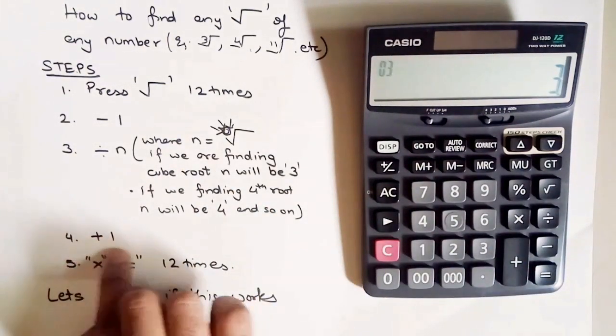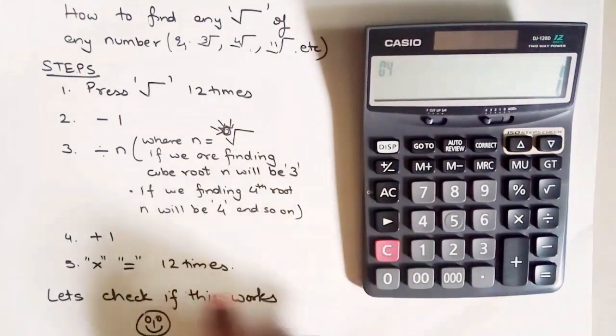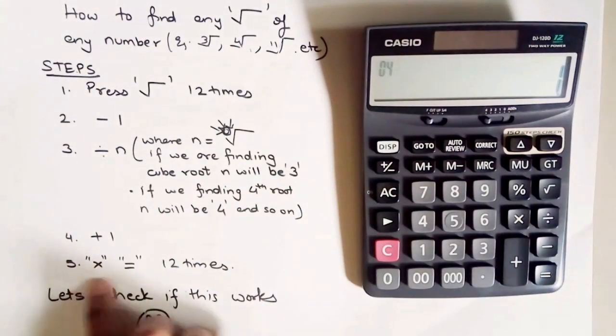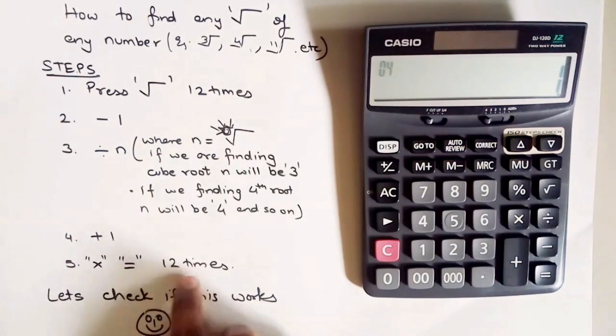Plus 1. Last step, multiply equals 12 times. So multiply equals 12 times, please be careful.